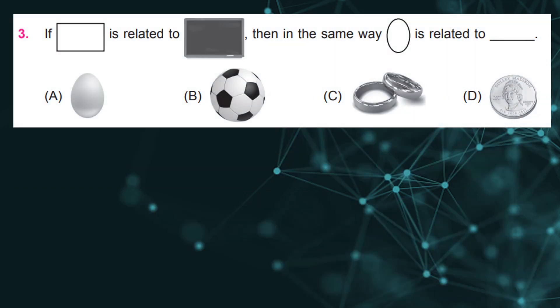If rectangle is related to filled rectangle, then in the same way oval is related to — answer: a.